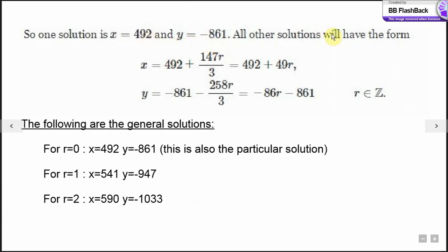All other solutions will have the form as from the general equation. To find the general solution, we again give values r equals 0, r equals 1 and r equals 2 to get these pairs of x and y: 492, minus 861, which was our particular solution, 541 and minus 947, 590 and minus 1033.